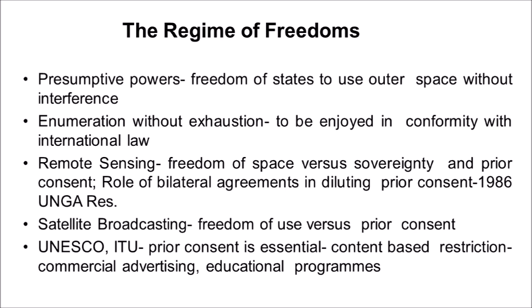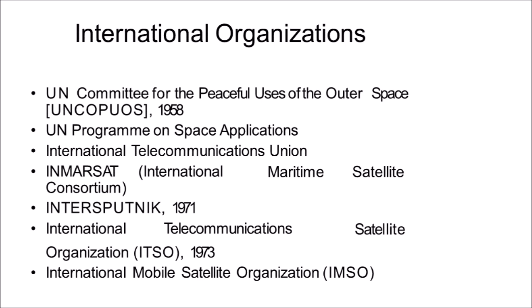The regime of freedoms grants pre-assumptive powers — freedom of states to use outer space without interference. This includes the principle of enumeration without exhaustion, to be enjoyed in conformity with international law. Remote sensing represents one example of the tension between freedom of space versus the Soviet Union's preference for free consent. Free consent plays a role in bilateral agreements, reflected in the 1986 UN resolutions. Satellite broadcasting also involves free consent, with UNESCO and ITU frameworks requiring prior consent along with content-based restrictions, commercial advertising, and educational programs.